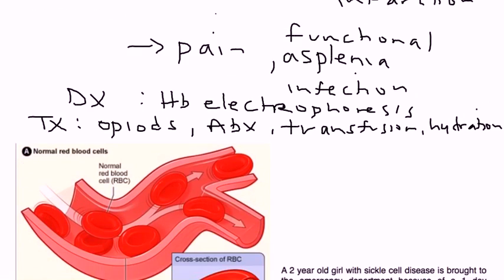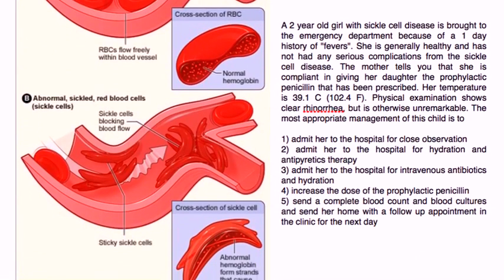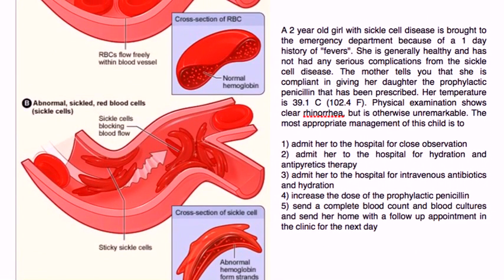Now I have a clinical vignette. A two-year-old girl with sickle cell disease is brought to the emergency department because of a one-day history of fevers. She is generally healthy and has not had any serious complications from the sickle cell disease. The mother tells you she is compliant in giving her daughter the prophylactic penicillin antibiotics that have been prescribed. Temperature is 102. Physical exam shows clear rhinorrhea but is otherwise unremarkable. The question asks for the most appropriate management of this child.